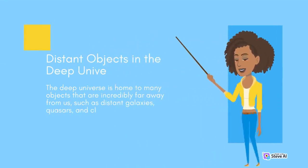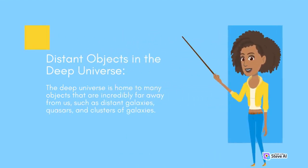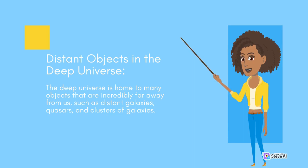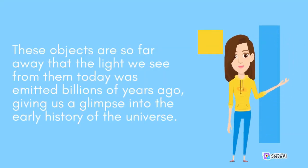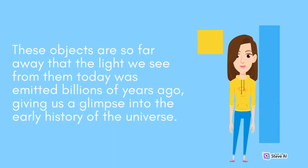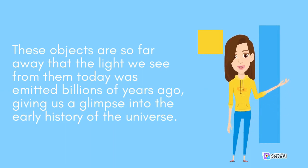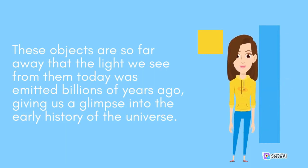Distant Objects in the Deep Universe. The Deep Universe is home to many objects that are incredibly far away from us, such as distant galaxies, quasars, and clusters of galaxies. These objects are so far away that the light we see from them today was emitted billions of years ago, giving us a glimpse into the early history of the Universe.